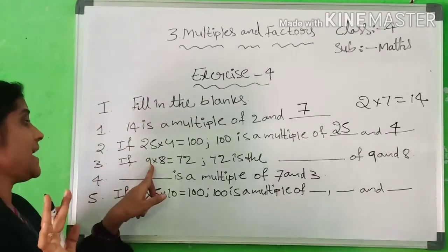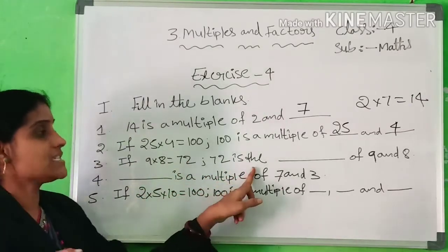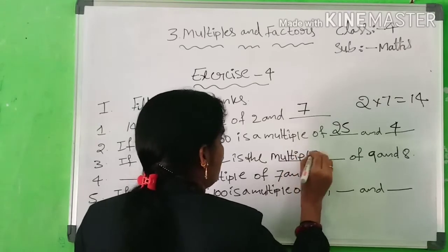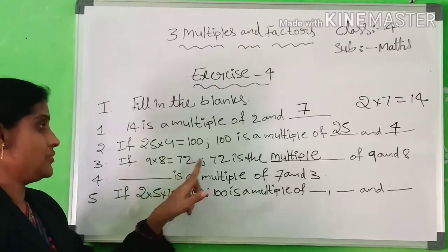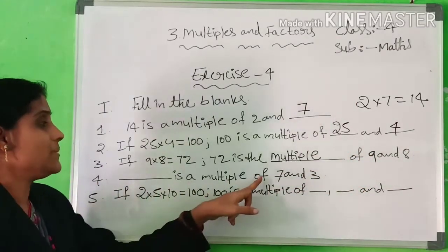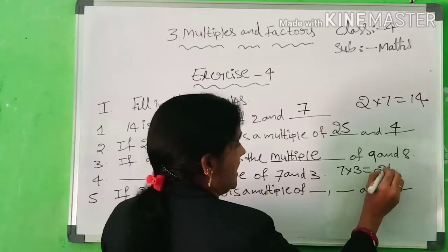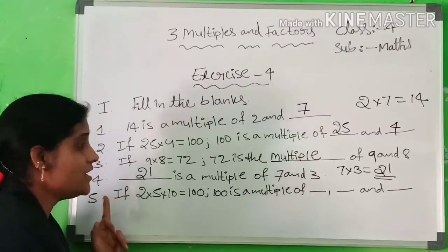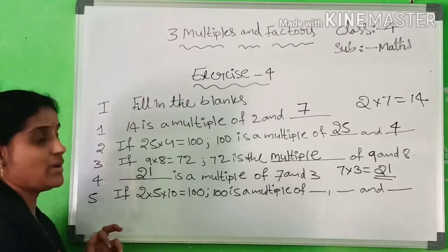Third one: if 9×8=72, then 72 is a multiple of 9 and 8. Fourth one: the blank is a multiple of 7 and 3. Since 7×3=21, the answer is 21. So, 21 is a multiple of 7 and 3.